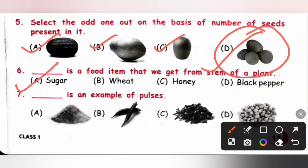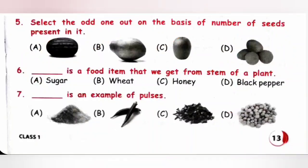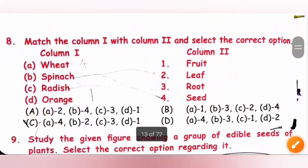Seventh one, dash is an example of pulses. We know option A: rice, it is a cereal. B: okra, it is a vegetable. C: clove, it is a spice. And option D: chickpea, which is a pulses. So option D is the correct answer.